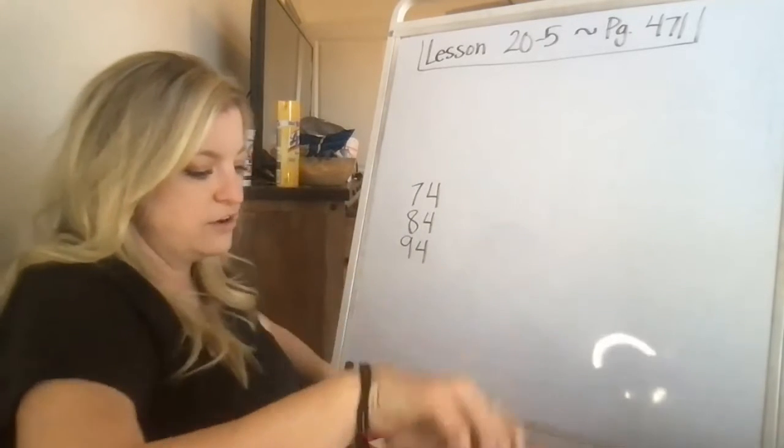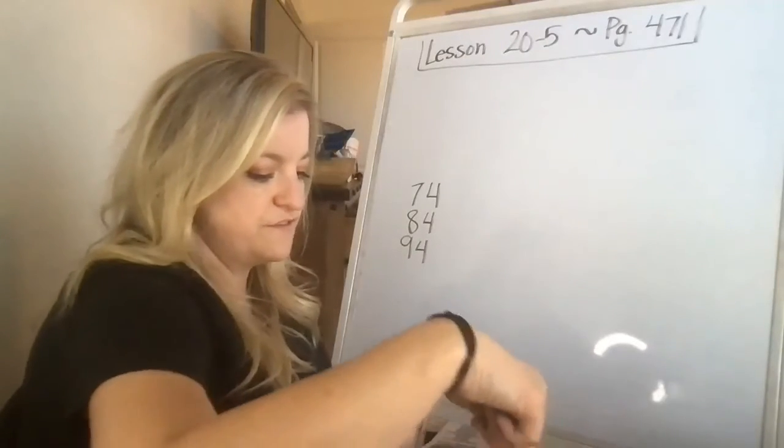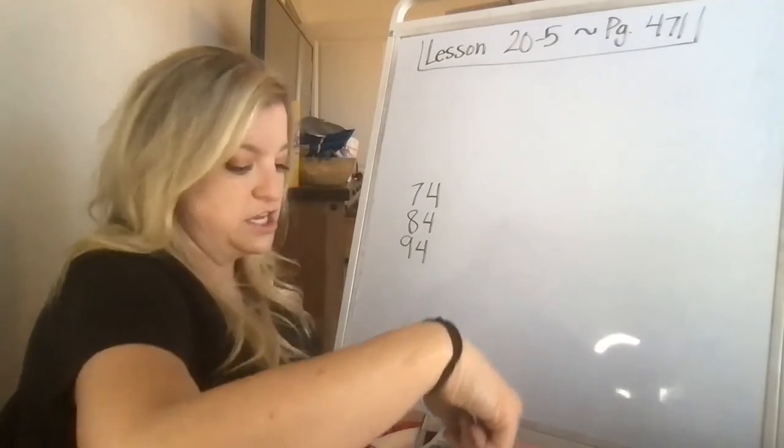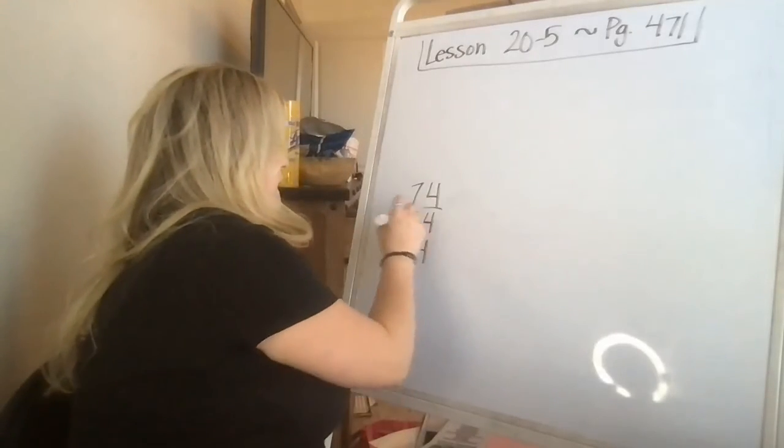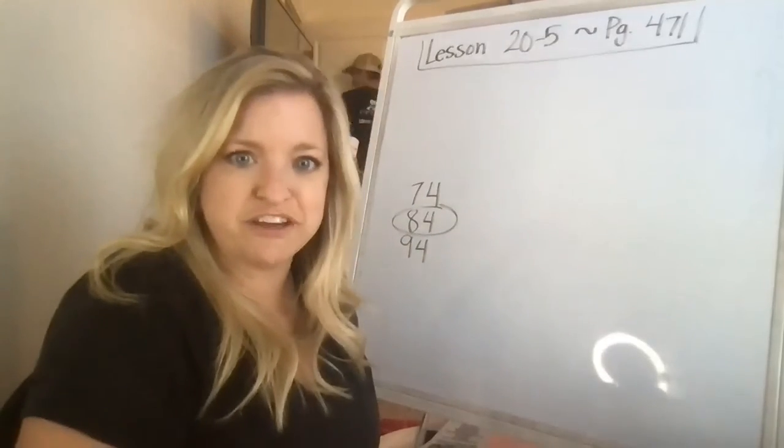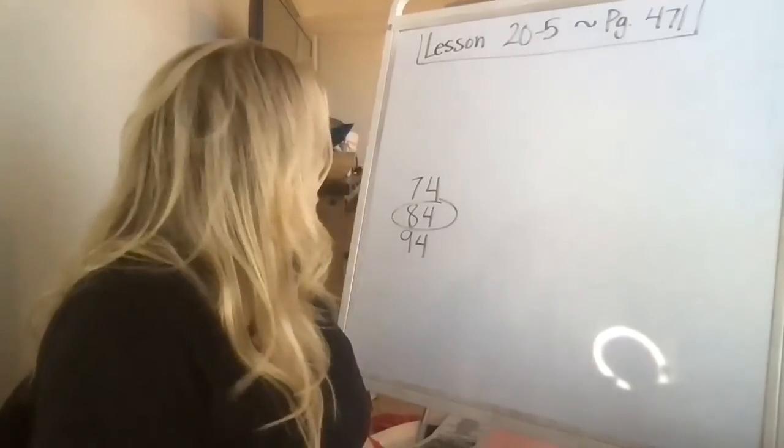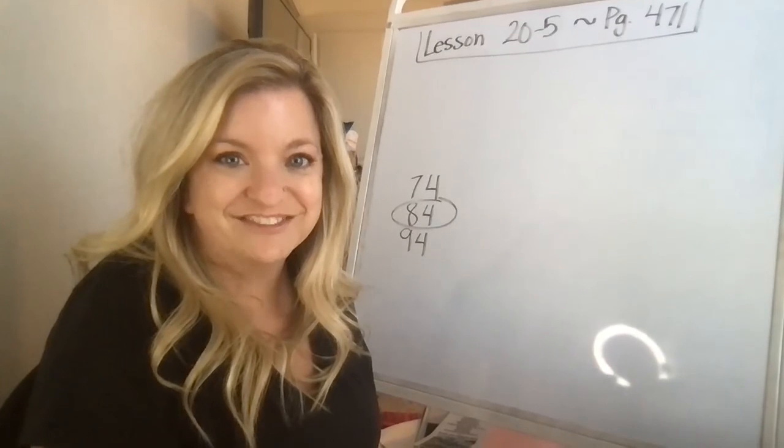So now I need to count up how many groups. 10, 20, 30, 40, 50, 60, 70, 80, 81, 82, 83, 84. There are 84 faces. Oh my gosh, he was busy drawing faces, wasn't he, friends? All right. Good job. Good luck on your test. I know you're going to do great. Bye.